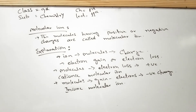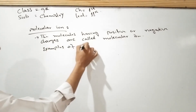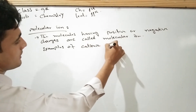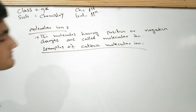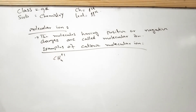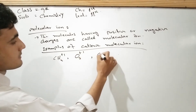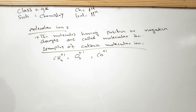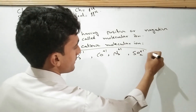Examples of cationic molecular ions include CO+ and CN+. These molecules carry a positive charge, making them cationic molecular ions. Examples of anionic molecular ions will follow.